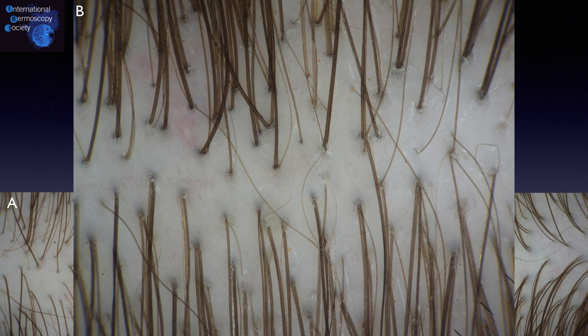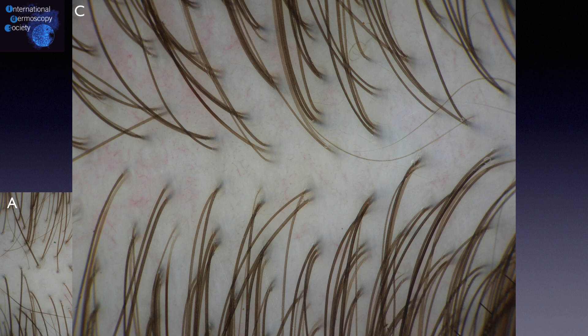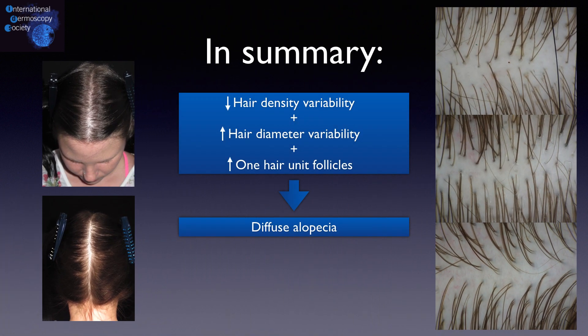In the vertex area, we notice better hair density, more two- and three-unit hair follicles, and also some thin hairs. In the occipital area, there is better hair density and less hair diameter variability. In summary, a patient with diffuse hair loss presenting decreased hair density and high hair diameter variability, especially comparing frontal, vertex, and occipital areas, associated with an increased number of one-hair-unit follicles, is suspicious of androgenetic alopecia.